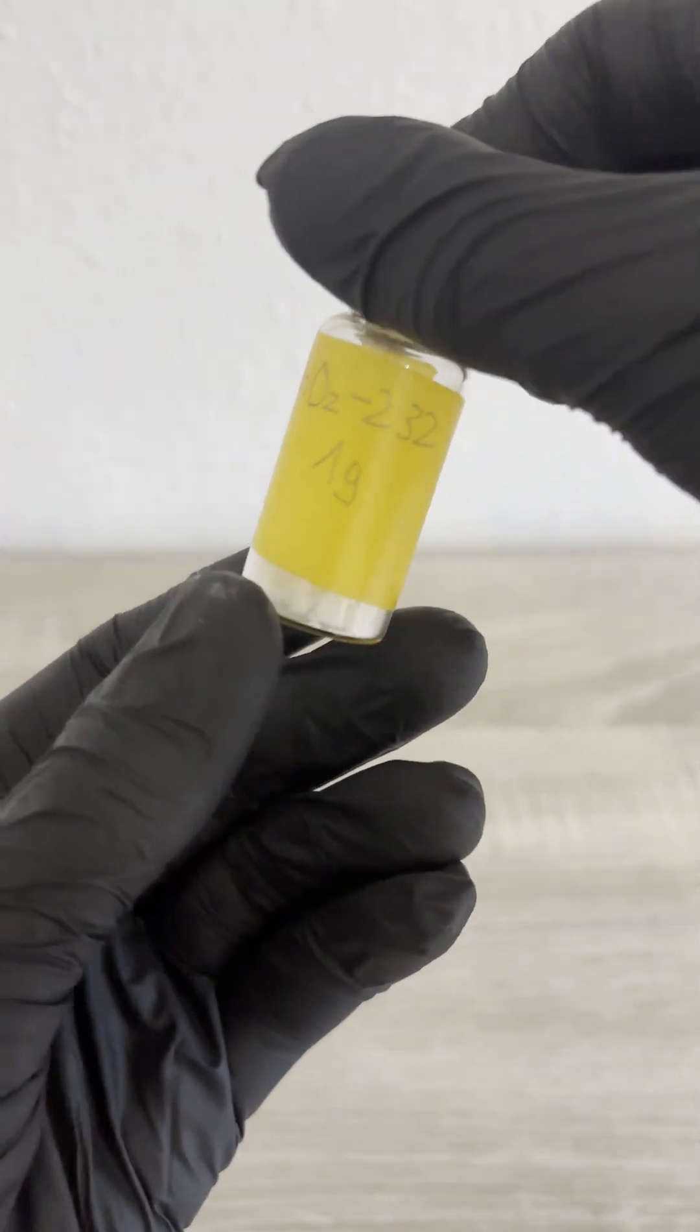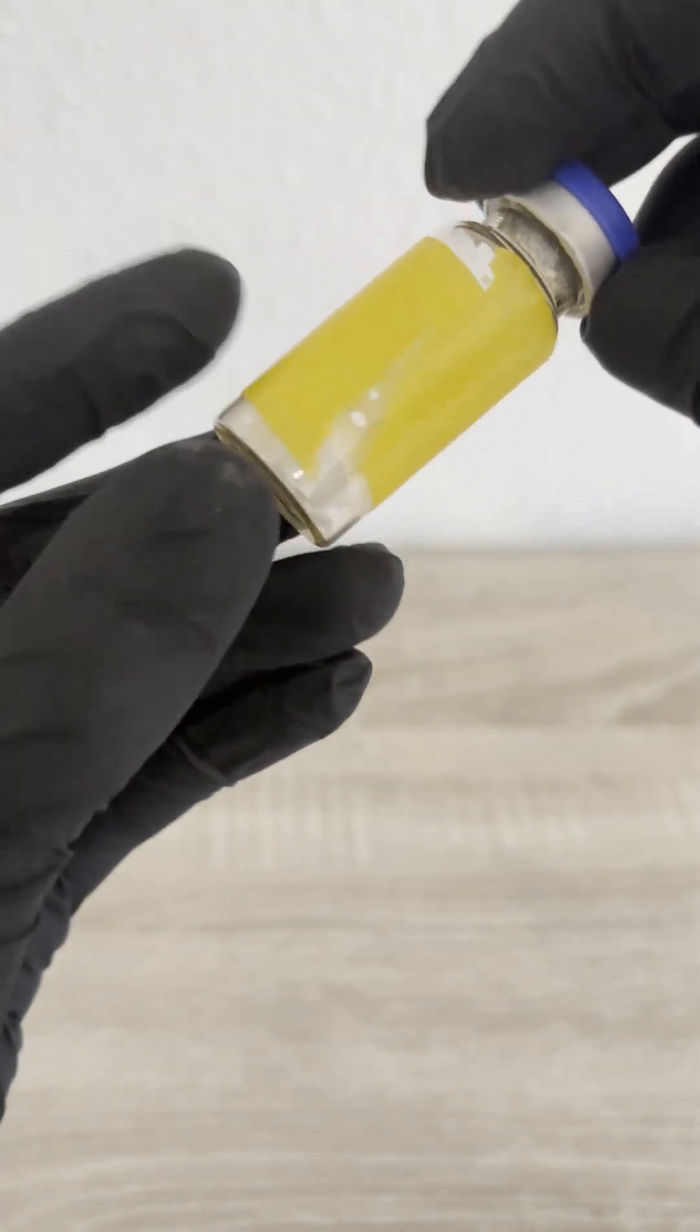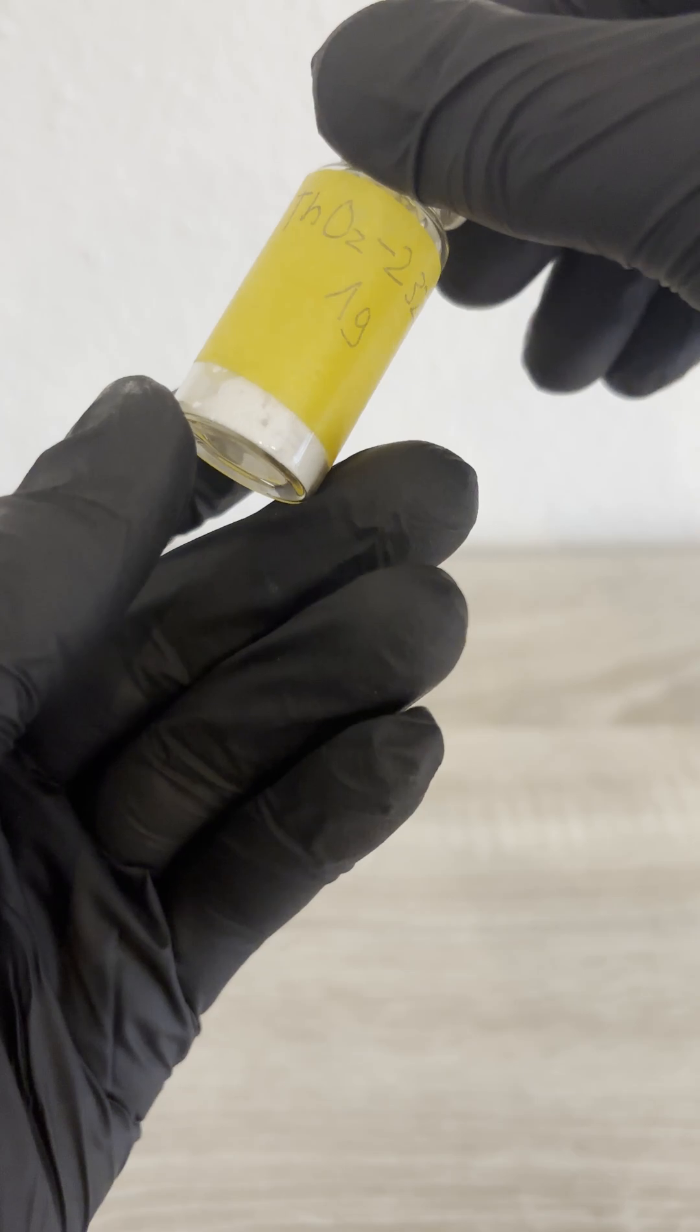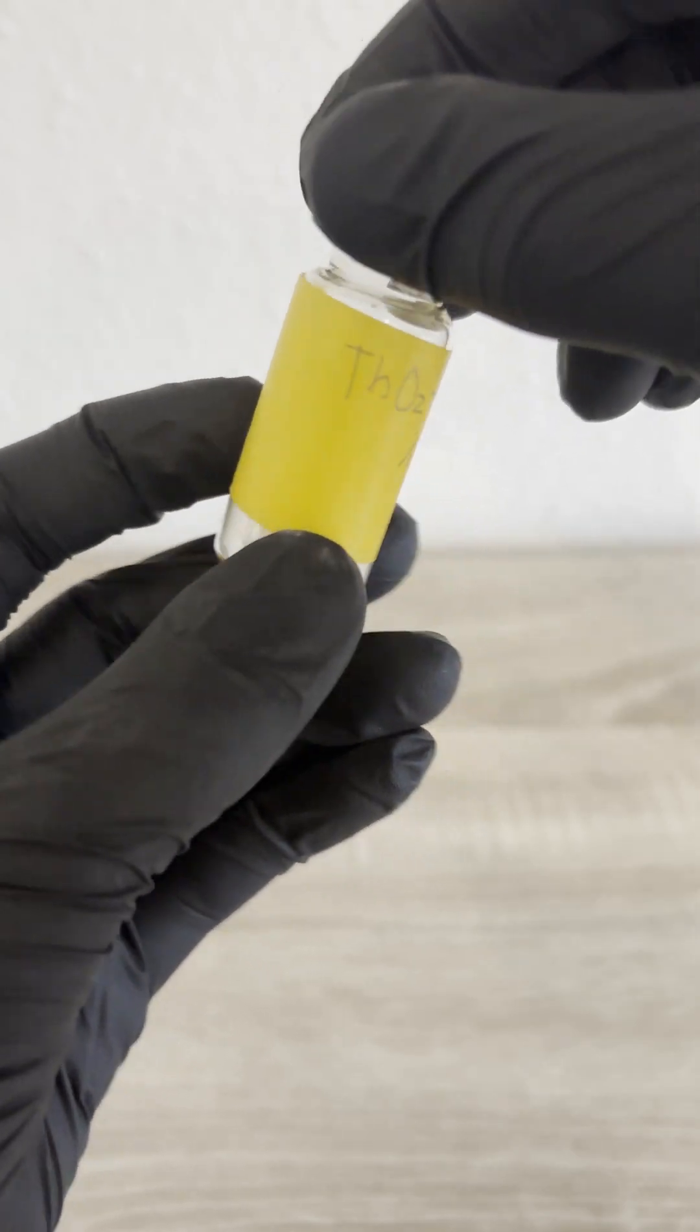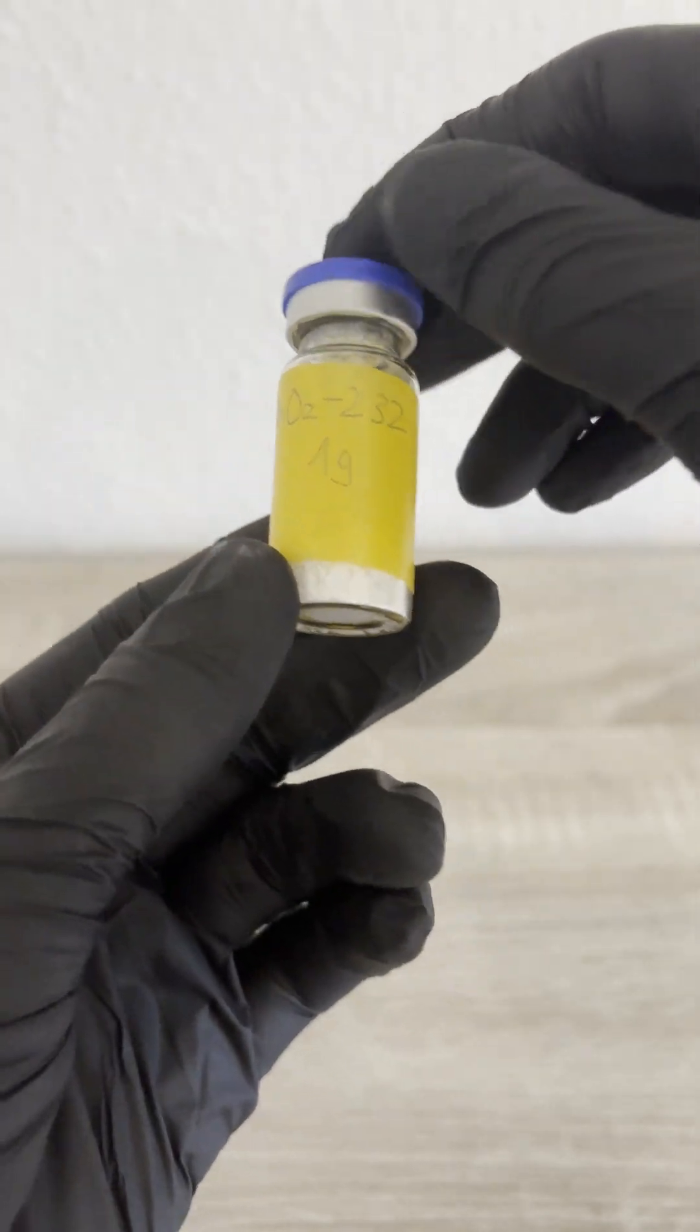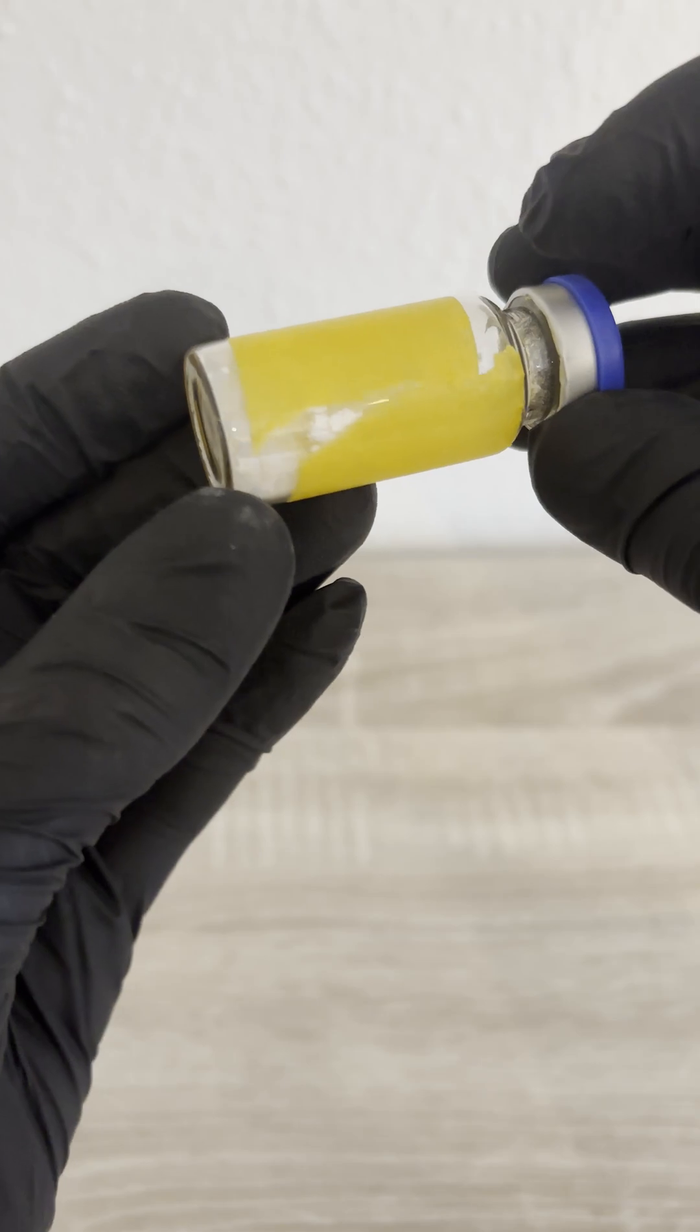This small vial contains thorium dioxide, a compound once used in everything from lantern mantles to ceramics and even early camera lenses. Thorium is naturally radioactive.